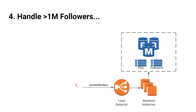So a mobile or web device would call a sync notification endpoint. It will go through the load balancer, get routed to one of the backend instances, and that backend instance — given a timestamp — will look for new updates by querying the pins and followers tables.